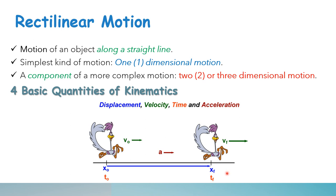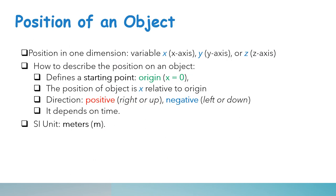For velocity, it talks about the rate at which the position changes. We can also say that it is the description of how fast and in what direction an object moves. Its scalar counterpart is speed, while acceleration means the rate at which the velocity changes during the time interval. The positions can be along the x-axis, y-axis, or z-axis.